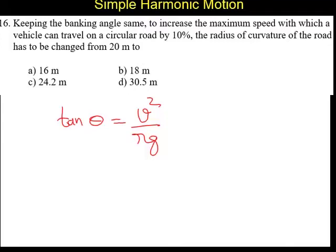Let us say this is the first equation. Now, we are increasing the velocity by 10 percent. What we have to find out here is the radius. So we put this radius as R = V²/(g tan θ).